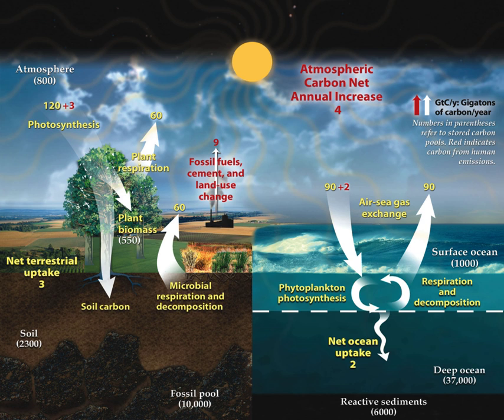If a 2,000-pound per year sequestration rate was achieved on all 434 million acres of cropland in the United States, nearly 1.6 billion tons of carbon dioxide would be sequestered per year, mitigating close to one quarter of the country's total fossil fuel emissions.